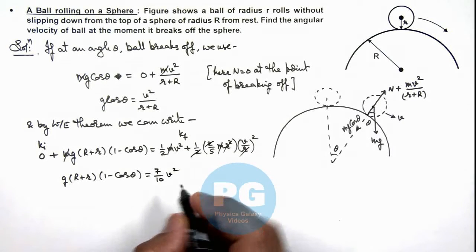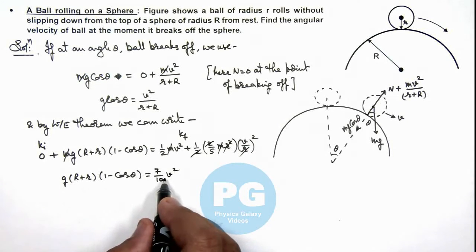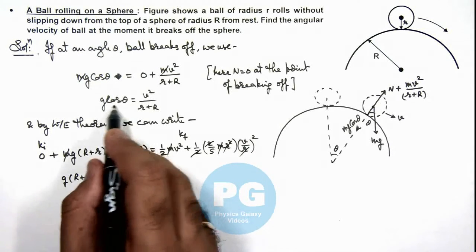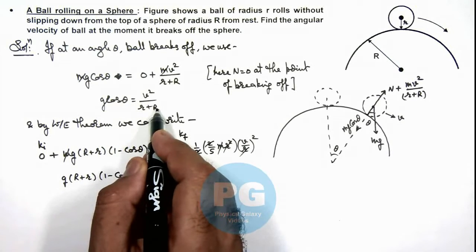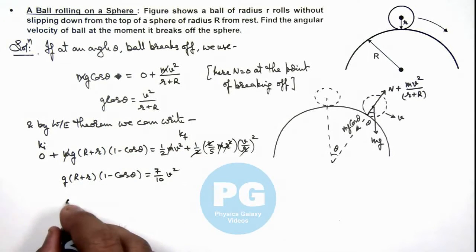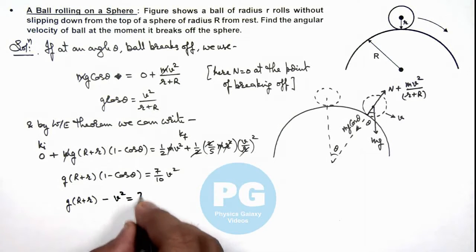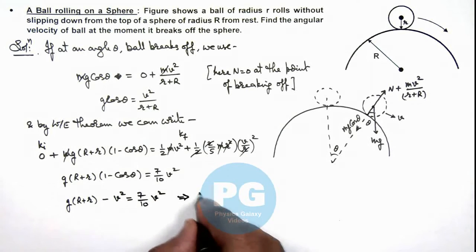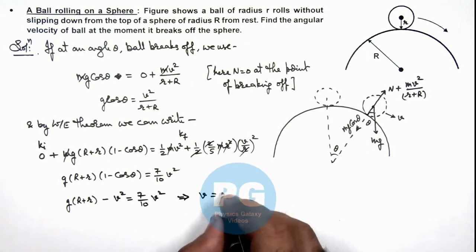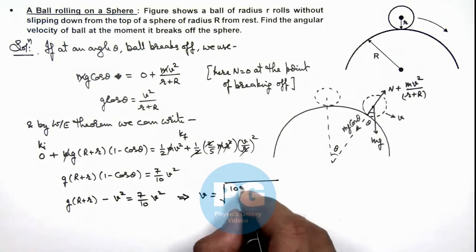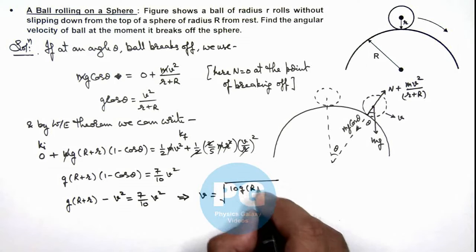Further, if we simplify, the value of cos theta we can write from here as v²/(R+r). So this gives g(R+r) minus g(R+r)cos theta equals 7/10 v². Which gives us the value of v equals the square root of 10g(R+r)/17.